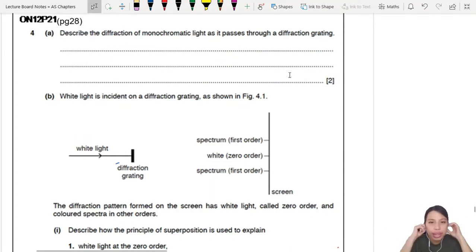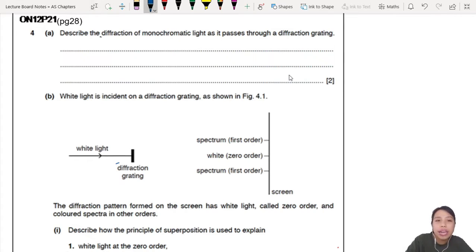Describe the diffraction of monochromatic light as it passes through a diffraction grating. You can draw, you can say the wave goes here, there it is spread out. But you need to describe it for two marks.